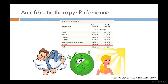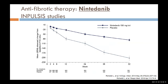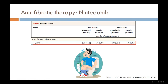Pirfenidone can have side effects. Nausea happens in about a third of patients, fatigue in about a fifth, and a sun-sensitive skin rash where patients can burn very easily in the sun also happens in about a third of patients. Nintedanib was studied in the IMPULSIS trials, and you're seeing the same kind of graph — the placebo arm's lung function goes down more quickly than in the nintedanib arm. Nintedanib's main side effect is diarrhea or changes in bowel movements — about two thirds of patients notice this. But with both drugs, these side effects are usually tolerable. In our clinic, about 85% of people are able to stay on their drugs.